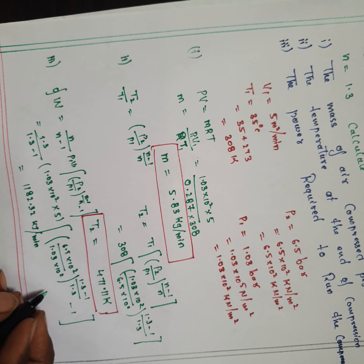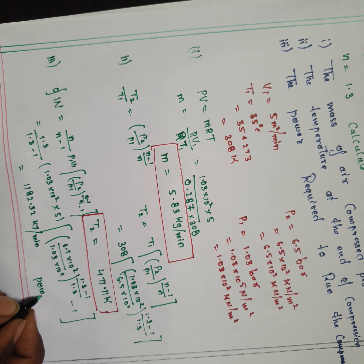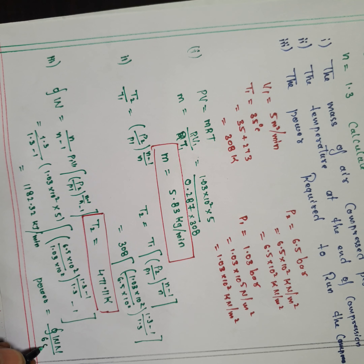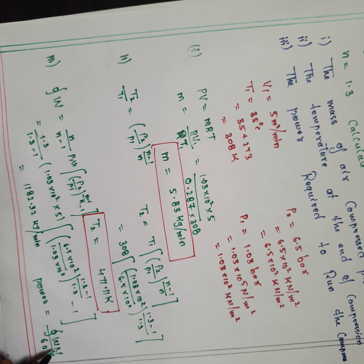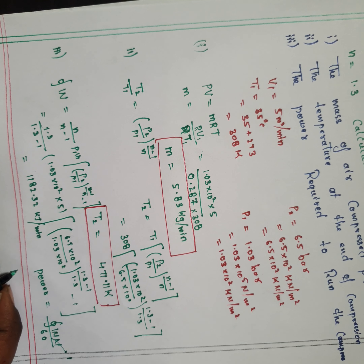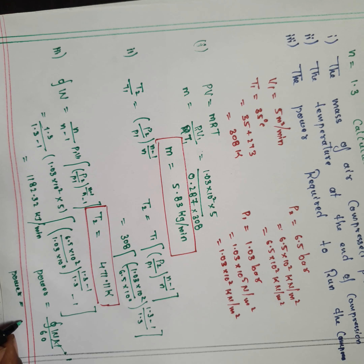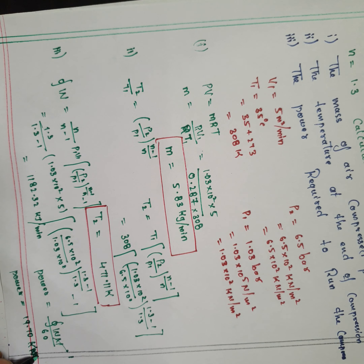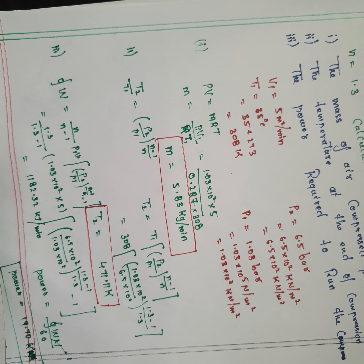For power, the formula is Power = W × N / 60. Since capital N (RPM) is not given in this problem, assume N = 1 by default. Therefore Power = 118.32 × 1 / 60 = 19.72 ≈ 19.70 kilowatts. Whenever N is not mentioned in the question, always assume N = 1.